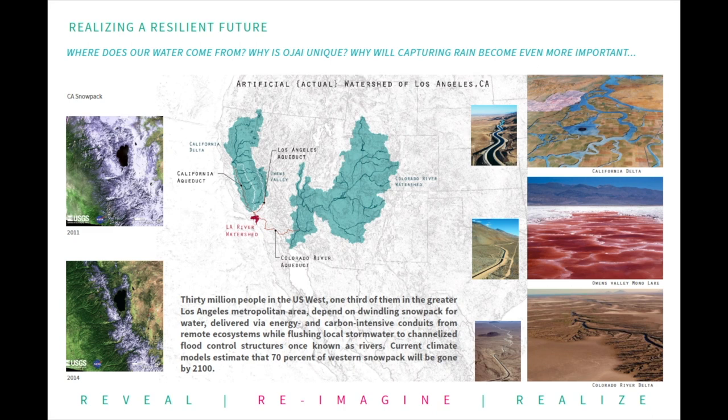In Los Angeles, the actual watershed of LA is much larger than the LA River watershed. They're drawing water from all these other ecosystems. The way that water connects us to other places is pretty powerful. The impact of using water in LA is incredibly disconnected from these other ecosystems.